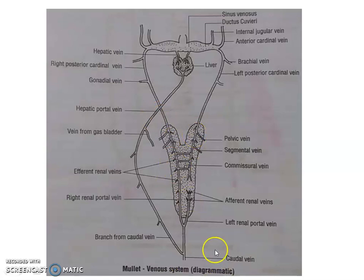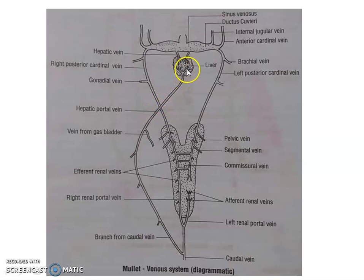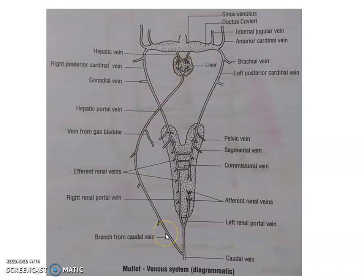The hepatic portal system starts with a branch from the caudal vein, which takes blood from the tail region toward the liver. On the way, it receives blood from various parts of the alimentary canal and from the gas bladder (swim bladder/air bladder), forming the hepatic portal vein. This vein enters the liver and gives off branches, allowing filtration. Blood collected in the liver is then drained by branches of the hepatic vein into the sinus venosus.